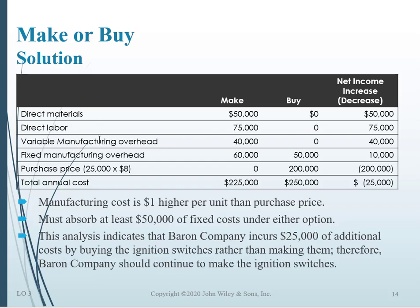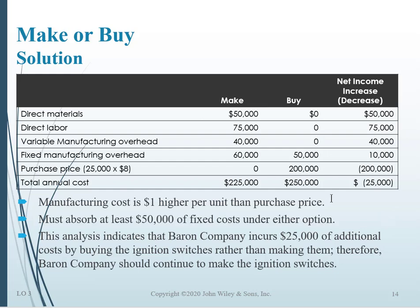Let's see what happens. If we stop making them, we save $50,000 in direct materials, $75,000 in direct labor, and $40,000 in variable costs. The fixed manufacturing overhead drops from $60,000 to $50,000 if we buy — still an increase in net income there. But if we buy, we have to pay a purchase price of $200,000, which is a decrease in net income. Adding these up, purchasing the product would actually cost us $25,000 more in net income, so we should keep making them ourselves.